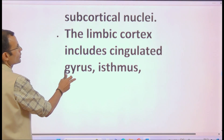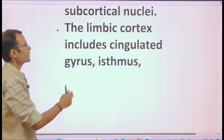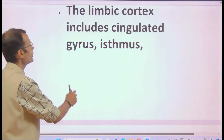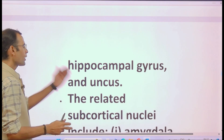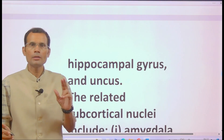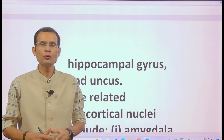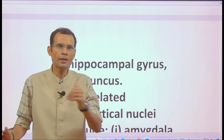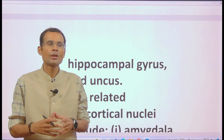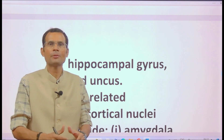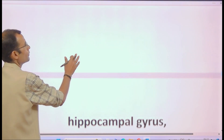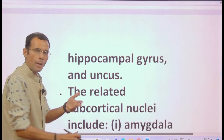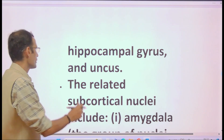Moving to structures — the second part of your answer — the limbic cortex includes: cingulate gyrus, isthmus, parahippocampal gyrus, and uncus. Note that there is no unanimity among authors as to which structures should be included, so I have taken the most commonly included structures.